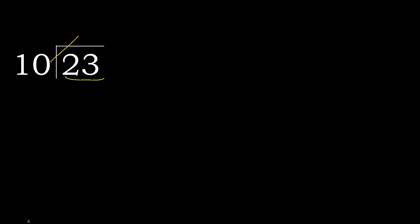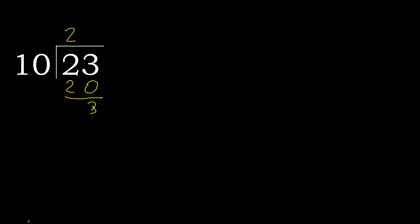10 multiplied by which number is nearest to 23 but not greater? 10 multiplied by 3 is greater; multiplied by 2 is 20, which is not greater. 23 minus 20 is 3.